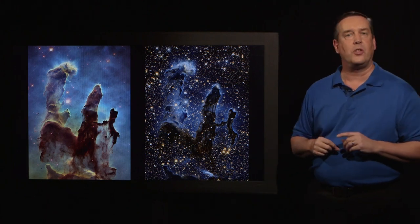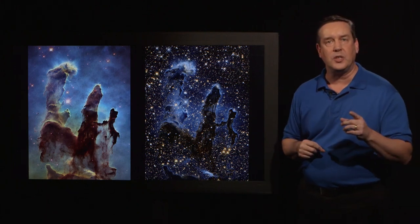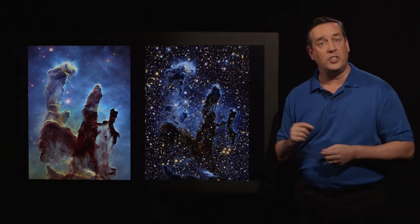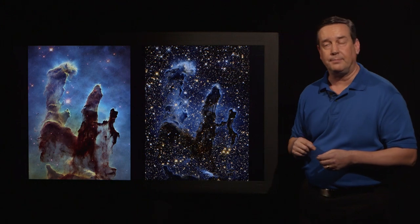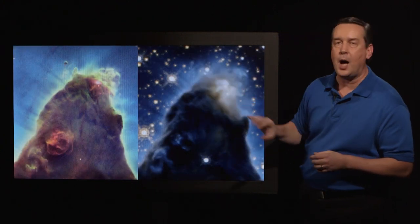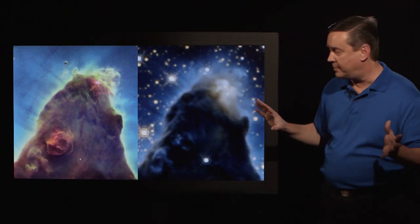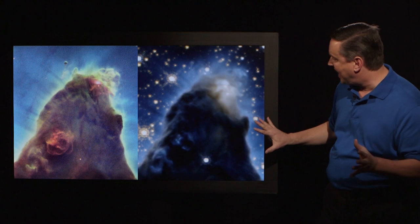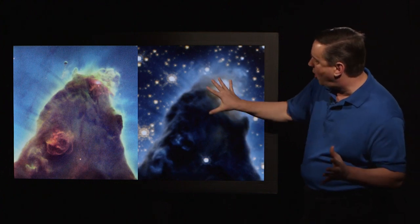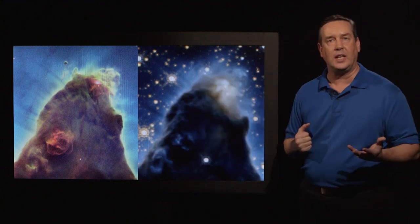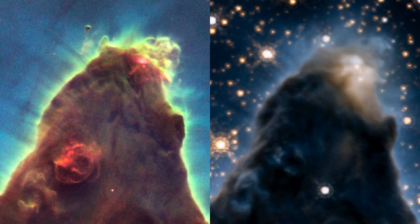Let's explore some of those comparisons, but this time doing visible light versus infrared light. We go back to the top of the middle pillar, and the first thing I notice is how opaque the gas is in infrared light. This indicates it must be really dense gas in here.